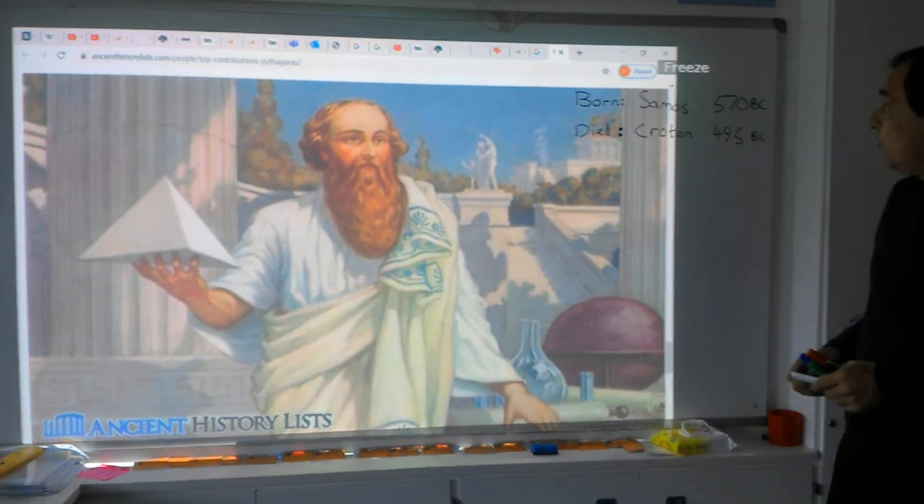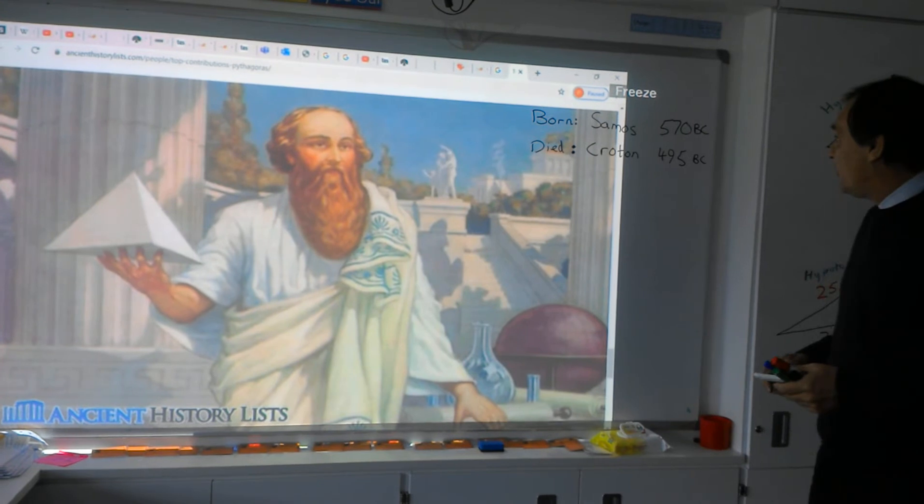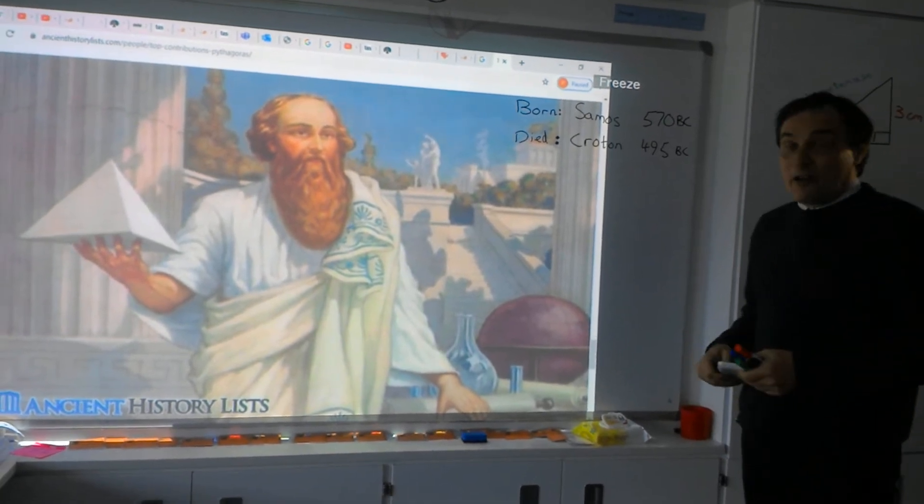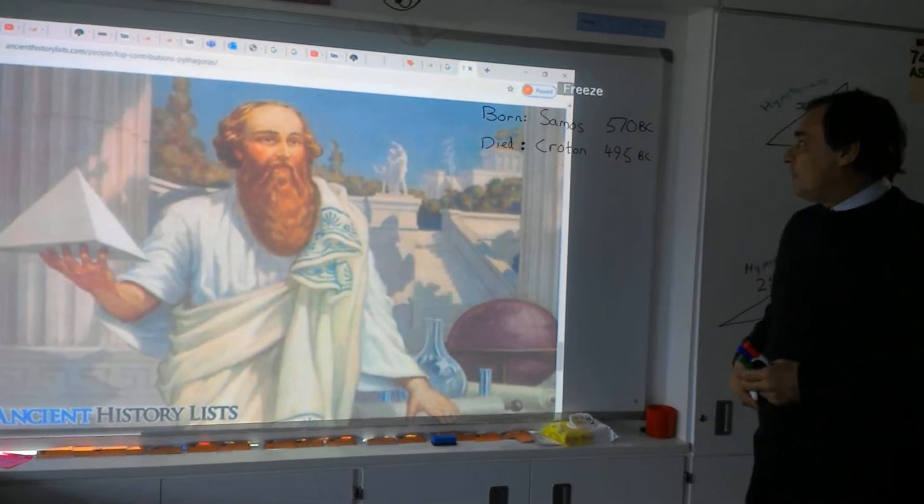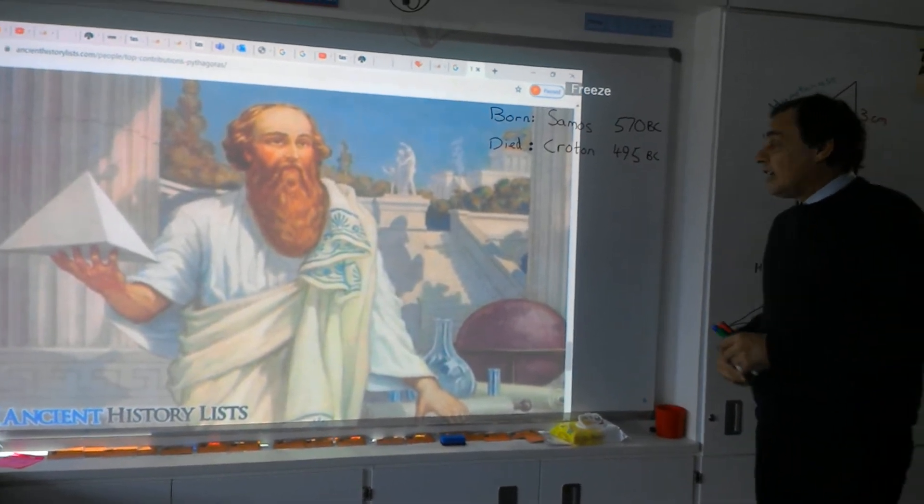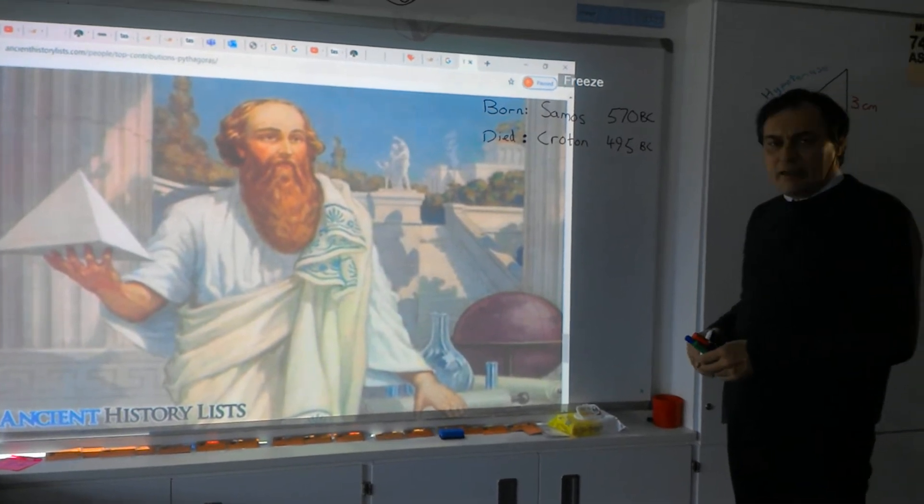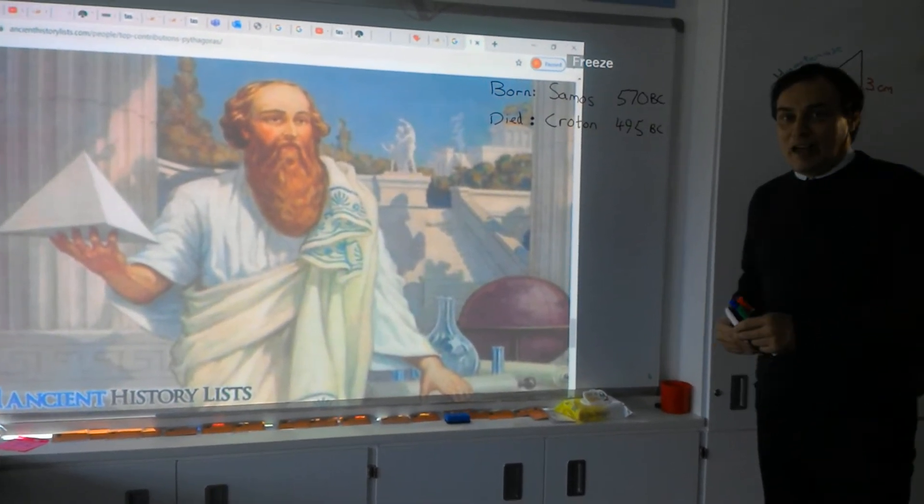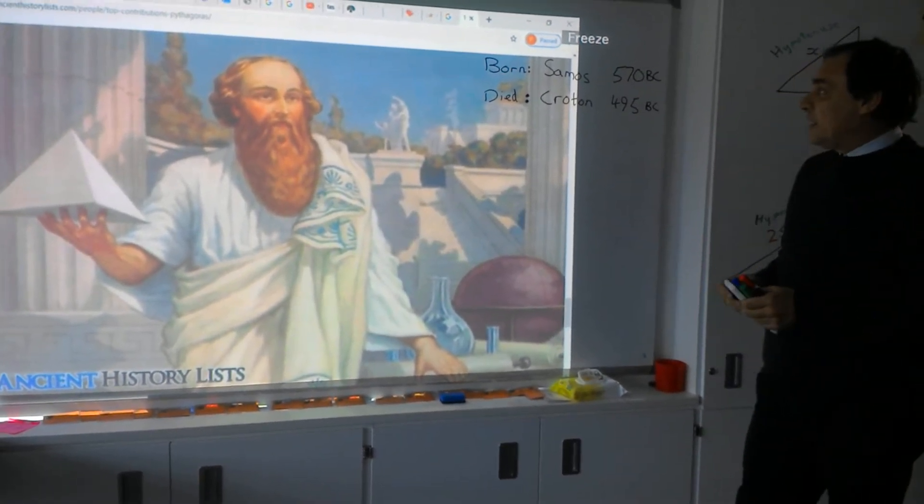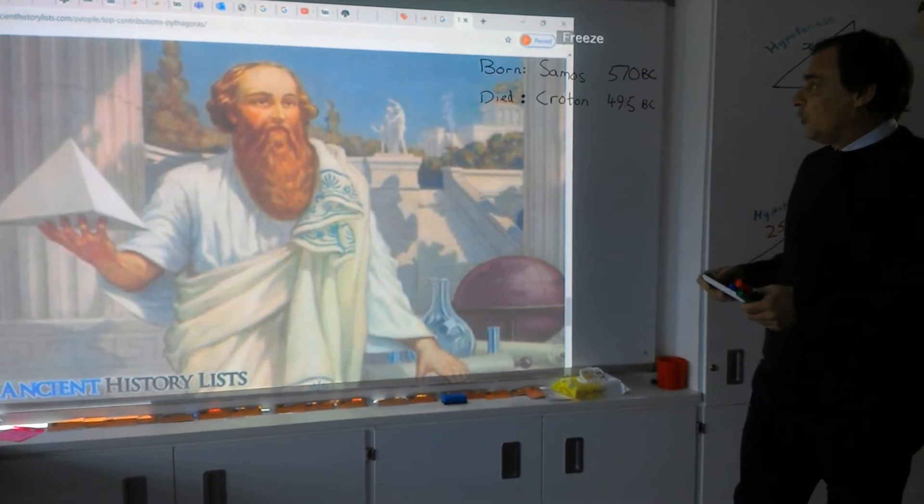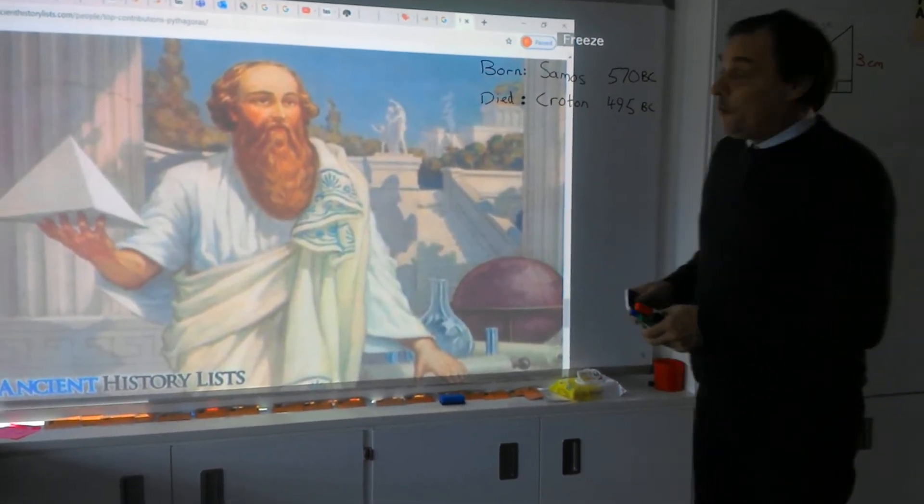Now, Pythagoras was born in a Greek island in the eastern Aegean Sea called Samos in 570 BC. He lived to the ripe old age of 75 and died in the Italian city of Croton, though we're not quite sure whether he died in a place called Megaponton, which is also in southern Italy. But either way, he lived to the ripe old age of 75.